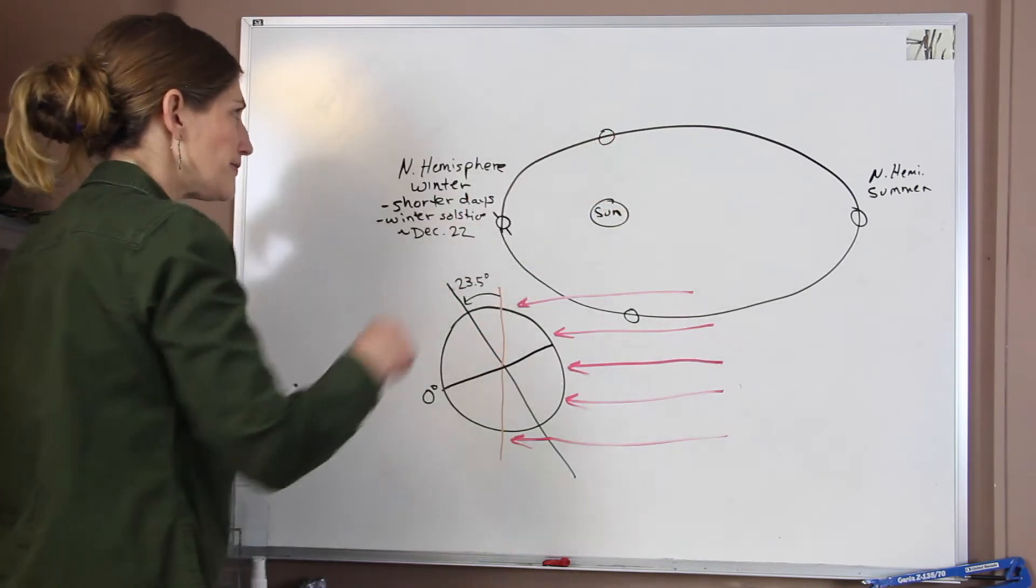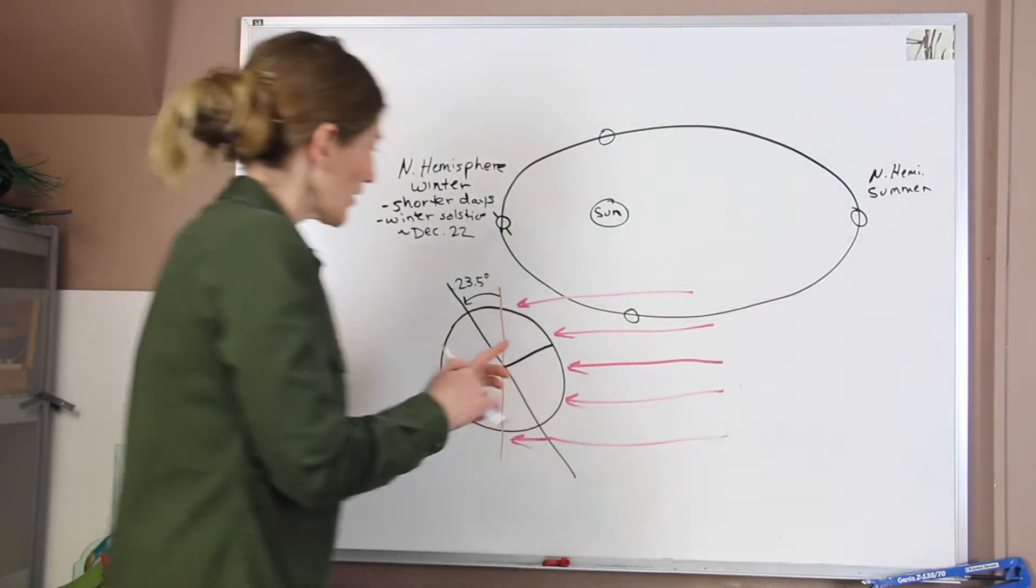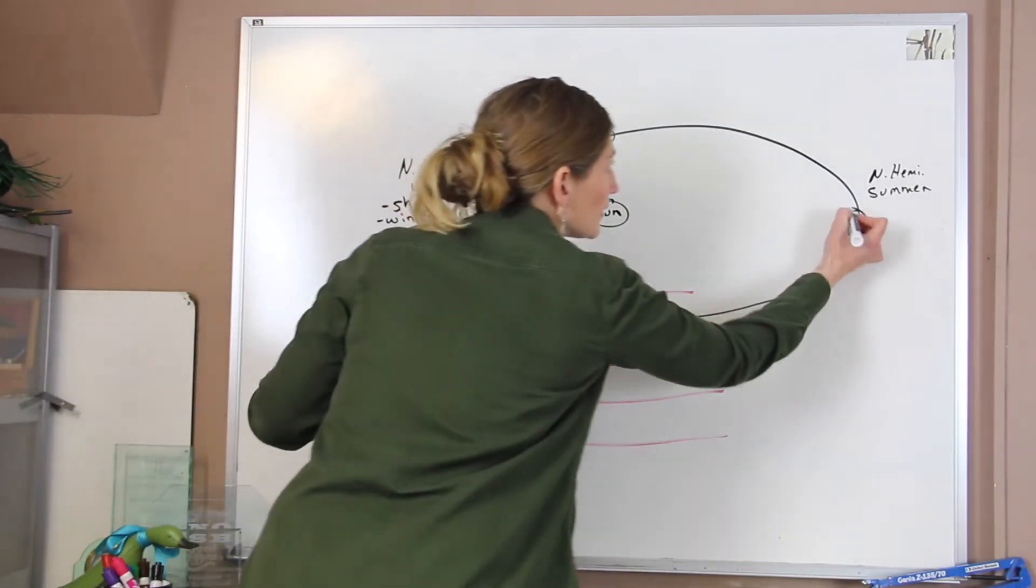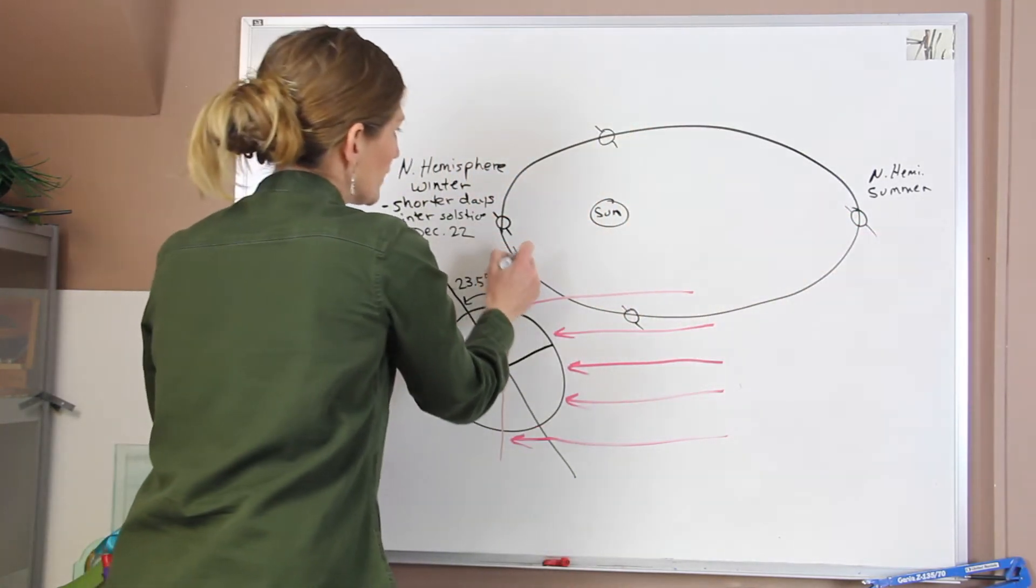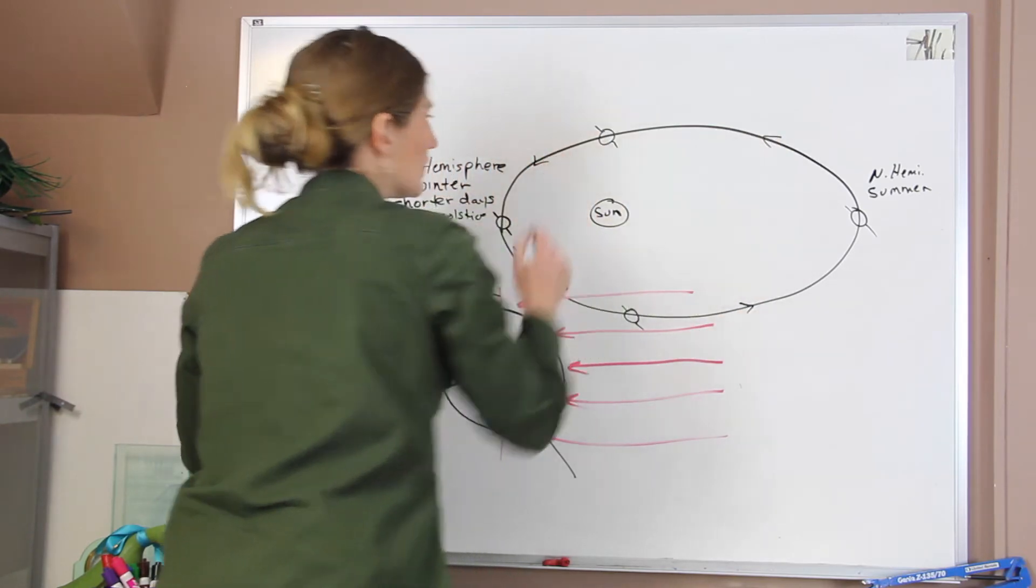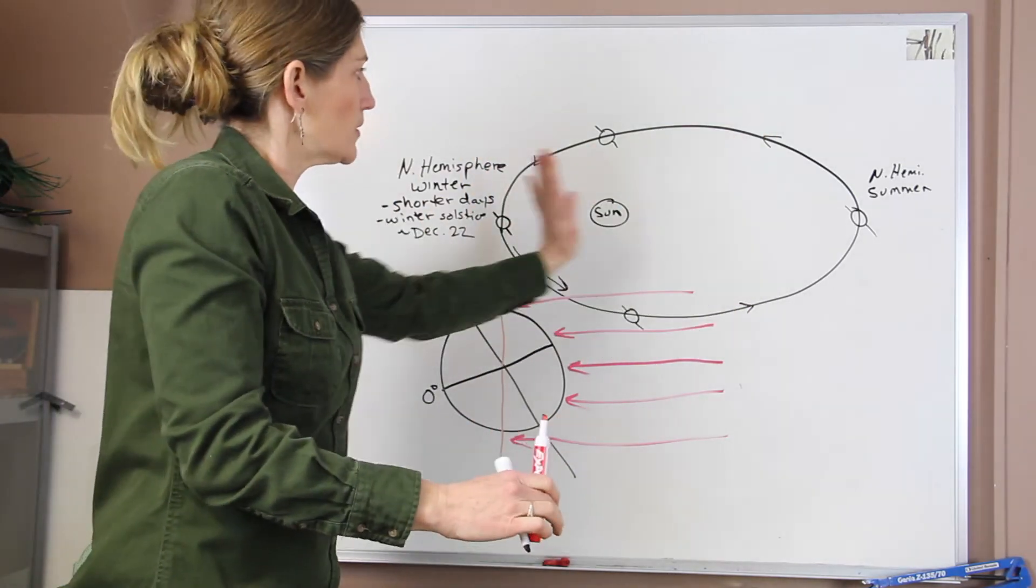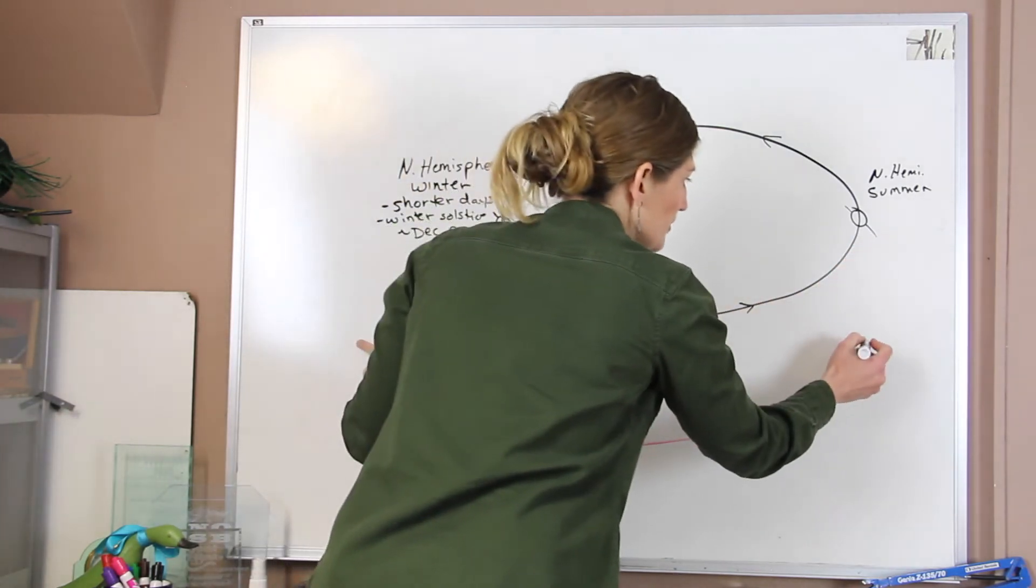Okay, now when we go over and we look at what's happening in the summertime here, now our tilt doesn't change. So we could draw it like this for each position. So we're moving in our orbit around. Okay, but the tilt always stays the same. So it's like the earth is just spinning at this angle as it goes around the sun. When we get over to our summertime position.